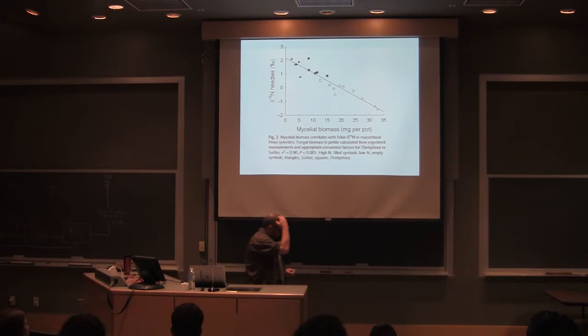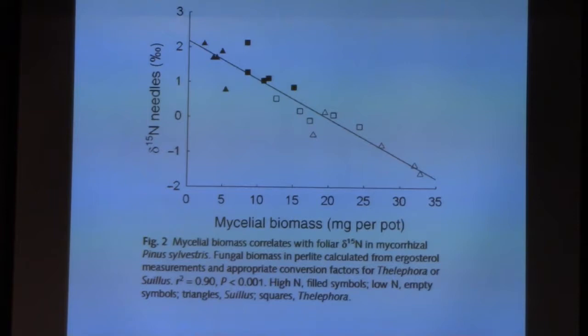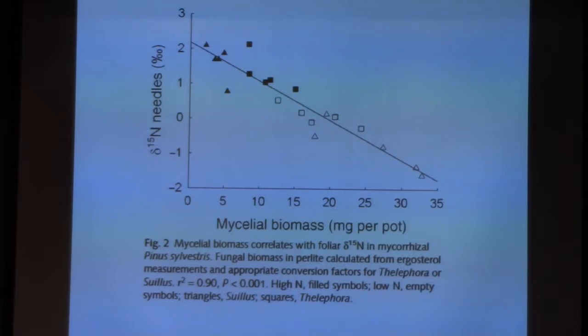There's another thing that needs to be added to this, but I want you to help me with it. Here's a figure, and this figure is a greenhouse project with Scots pine. What they did is they grew Scots pine and did three things: they made them high nitrogen — all the nitrogen the plants could use — and they made it low nitrogen where they were stressed for nitrogen.